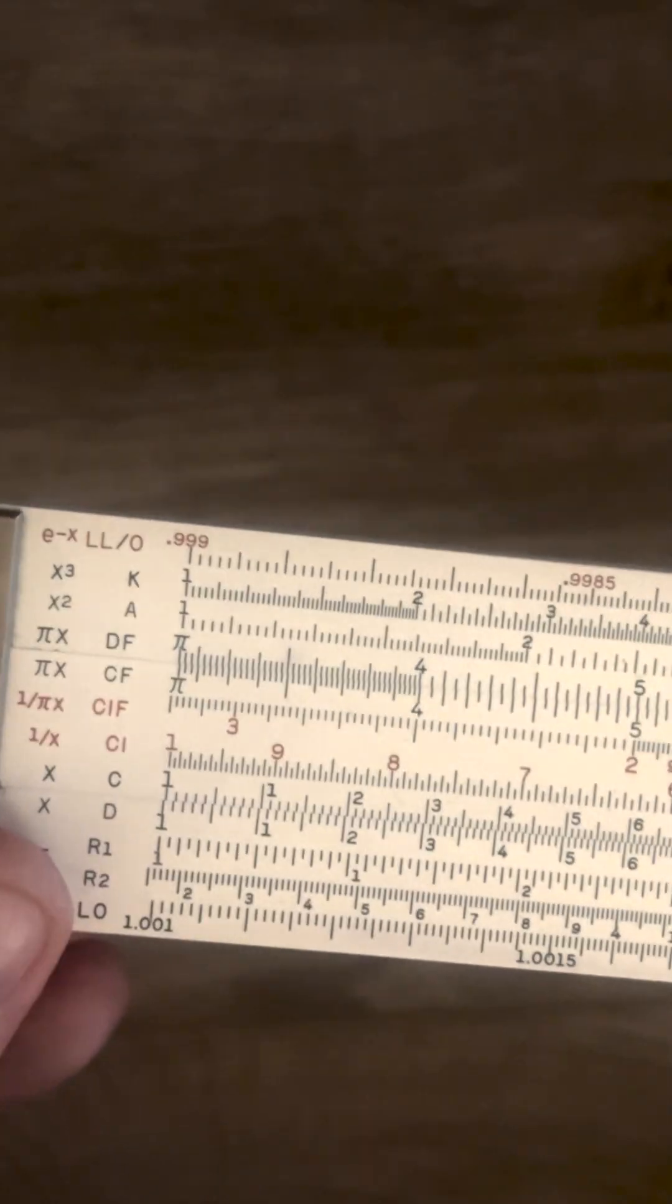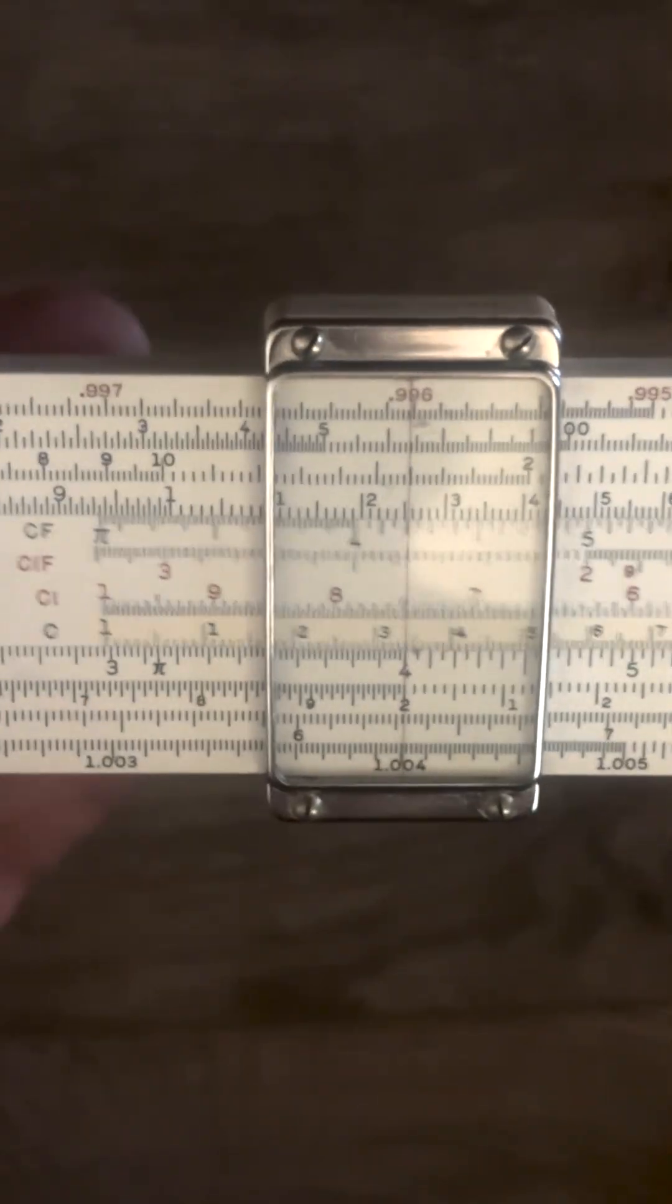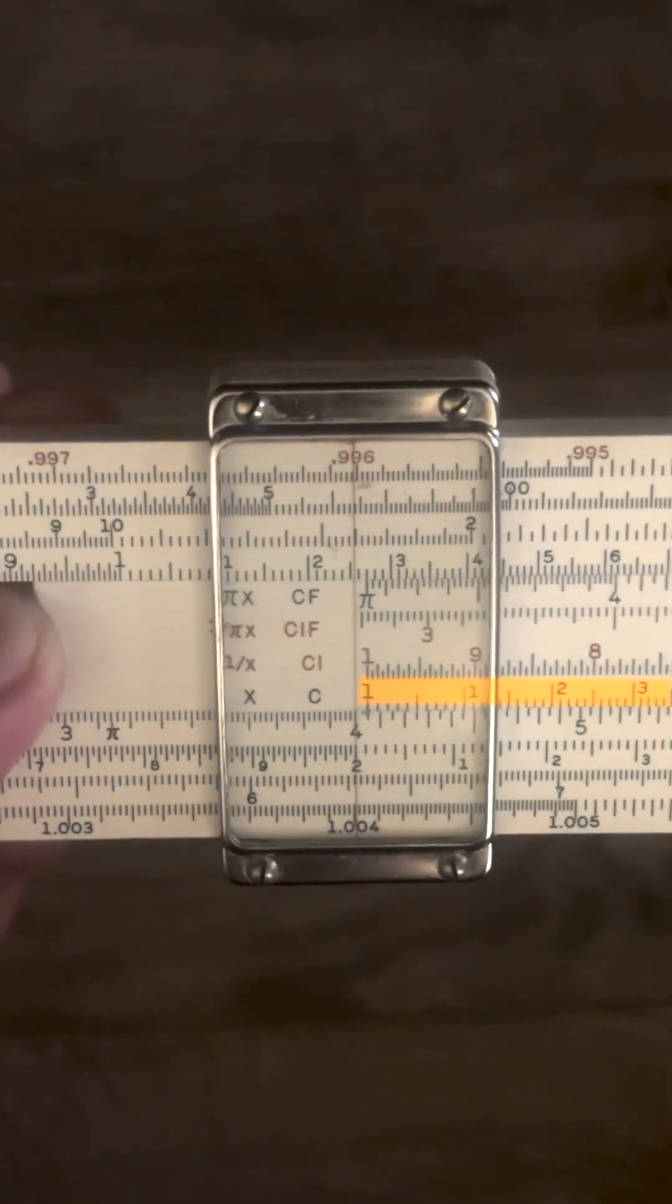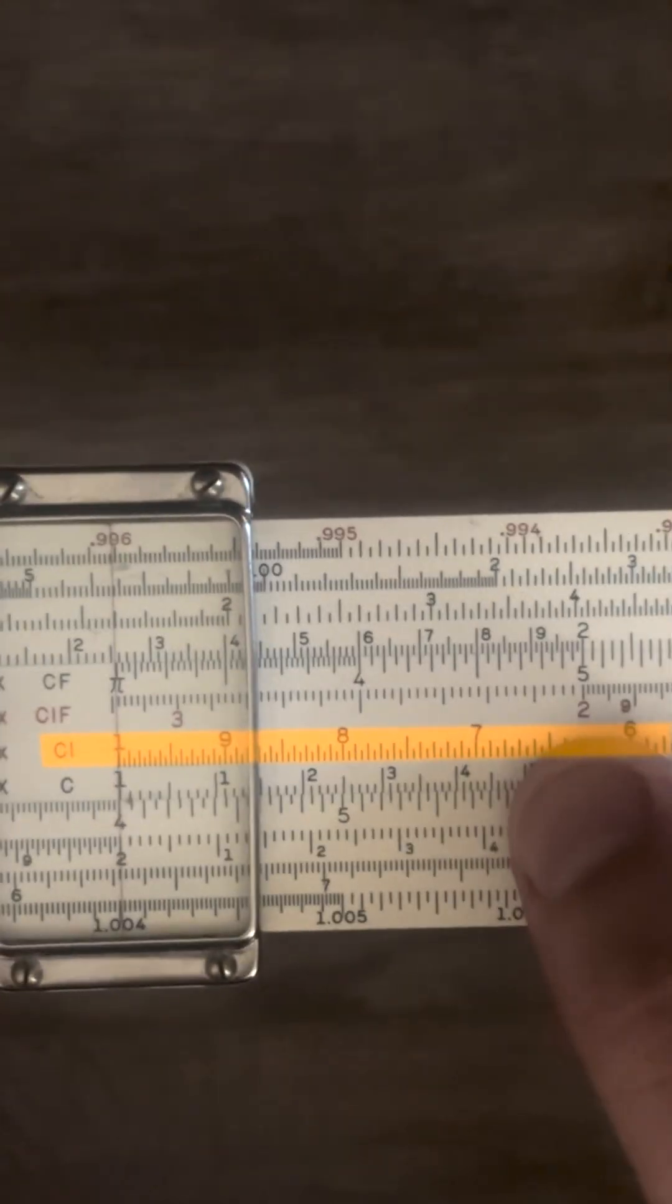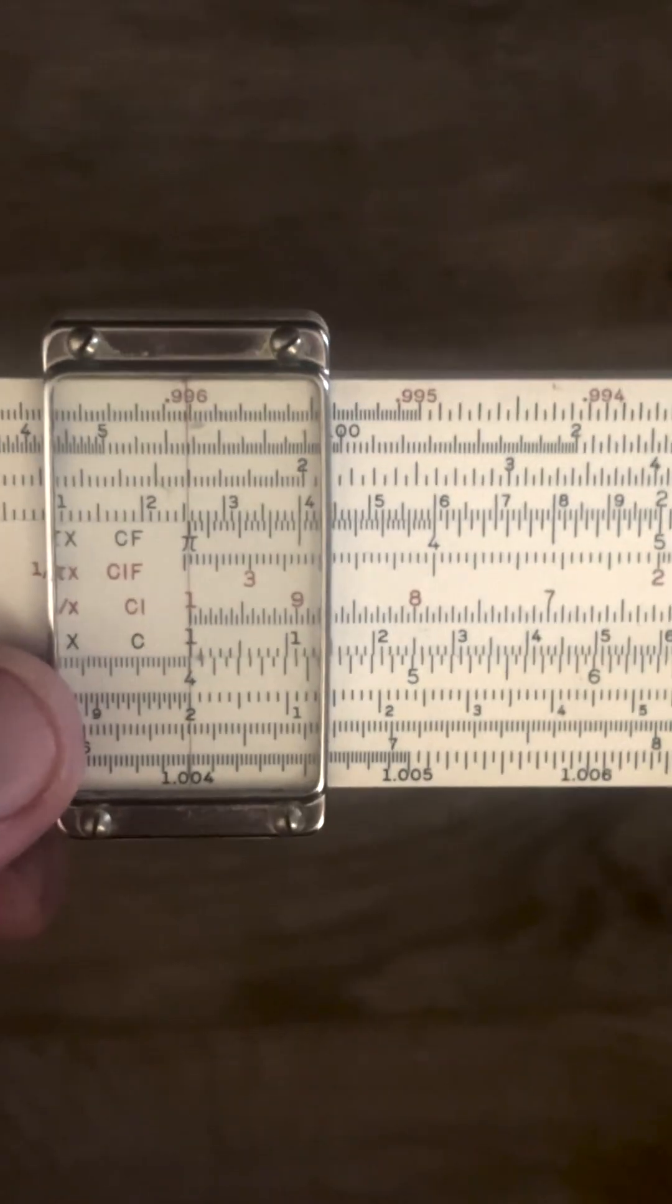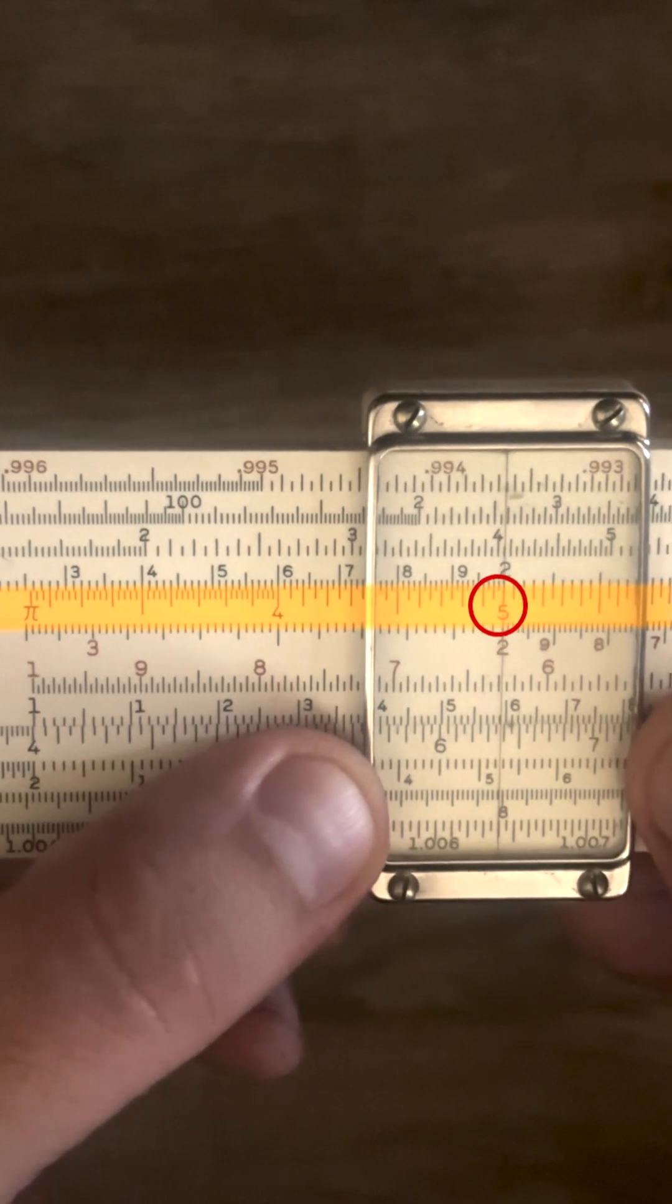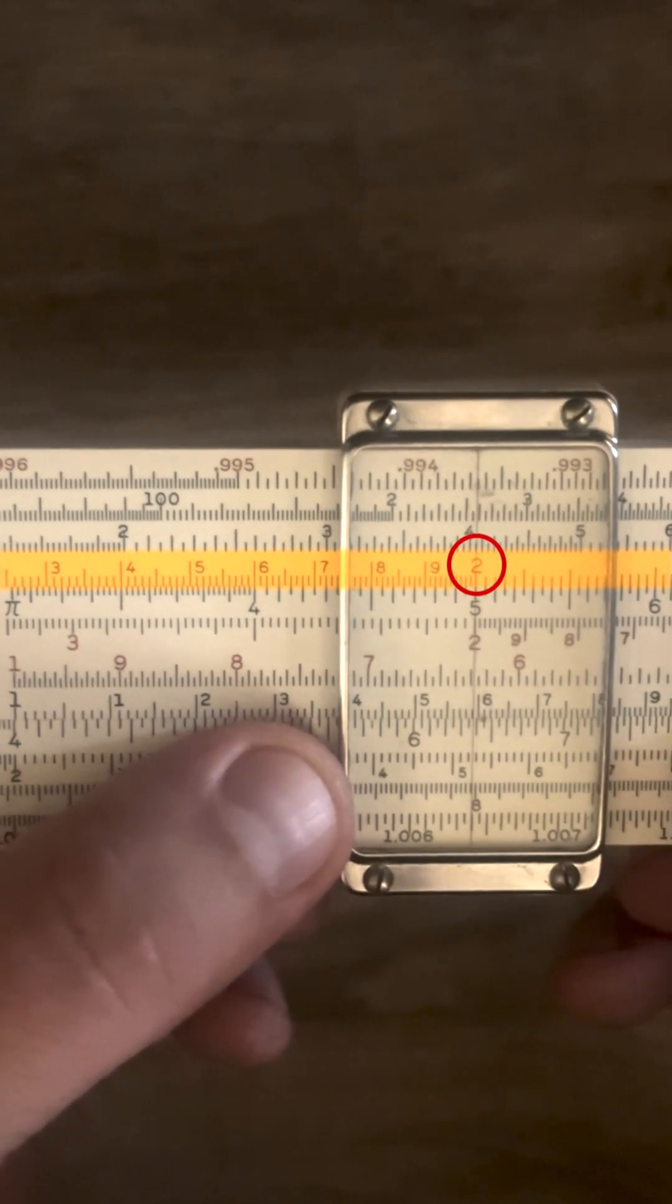And another thing you can do with the C and F scales is remember we had that problem where if we wanted to do 4 times 5 and if I put the left index here. Now we did learn that we can also use the CI scale but you can also use the folded scales. So if I'm trying to find 5 it's all the way out here I can't use it. But if I go to 5 on the C folded scale up on the D folded I'm going to see 20.